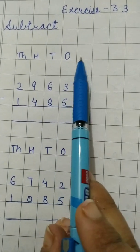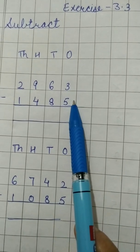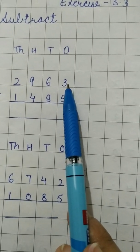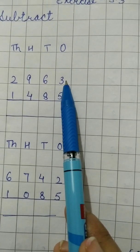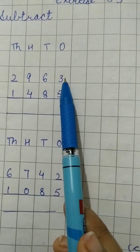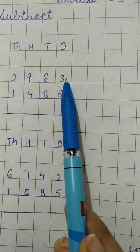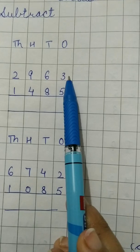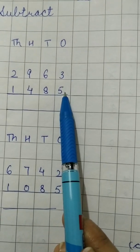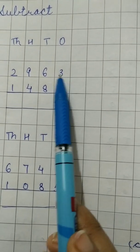See children, here we have to see the ones column first. Here let us check whether the borrowing is needed or not. The upper number should be greater when the borrowing is not needed. But here the upper number is smaller than the lower one. Means 3 is smaller than 5. So it will borrow from the next friend.